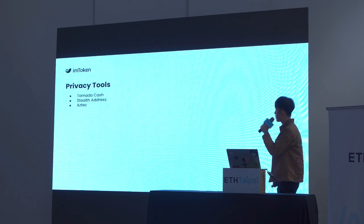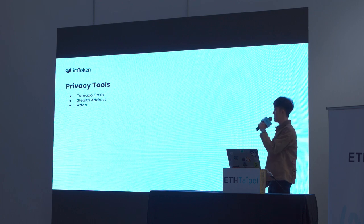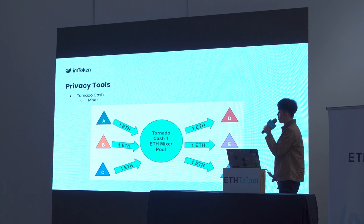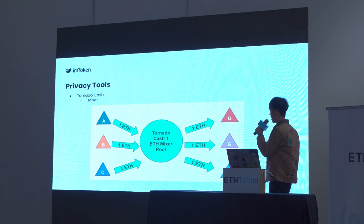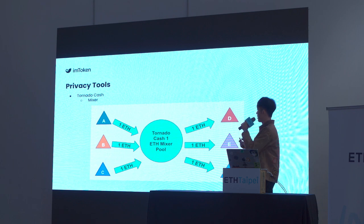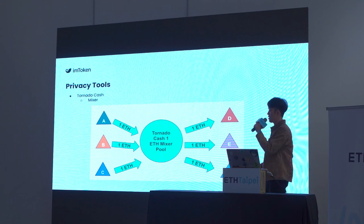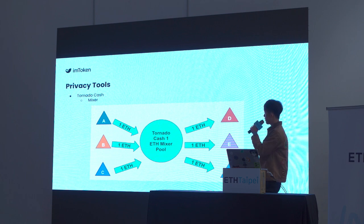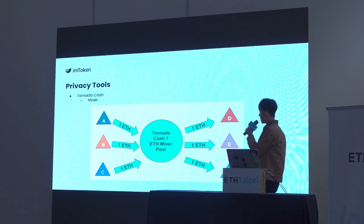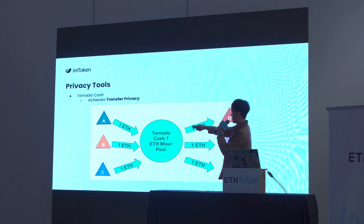The second part covers privacy tools. I'll go over three common tools and show what aspects of privacy each achieves. The first is Tornado Cash — it's a mixer. People throw money into this mixer, protected by cryptography like zero-knowledge proofs. It spits money out to different addresses, so since the money is so mixed up, nobody can tell exactly who transferred money to which account. It achieves transfer privacy because it breaks the link between sender and receiver.